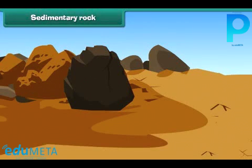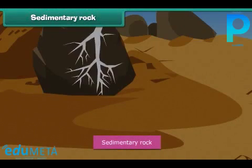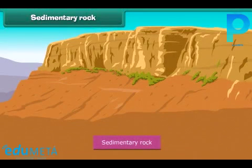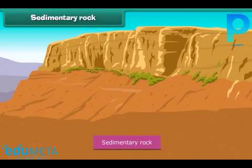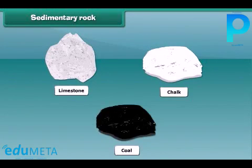Now let's discuss about sedimentary rock. Water and air break igneous rocks into smaller rocks, and consequently soil is formed. These pieces settle into layers, then these layers get compressed and harden, and finally become sedimentary rock. Sedimentary rock is usually soft to touch. Limestone, chalk, and coal are examples of this kind of rock.